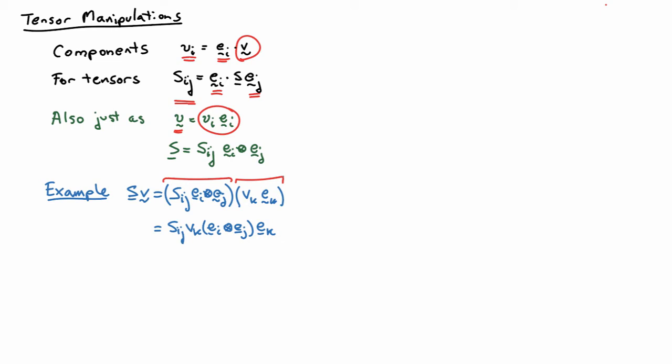Now I can use the definition of the outer product to further the calculation. I'll have EJ dotted with EK multiplied by EI. EJ dotted with EK is just going to be the Kronecker delta. I can use the properties of the Kronecker delta to simplify — there's a sum on J and a sum on K, so I can replace K by J, ending up with Sij VJ EI. This is the component expression for S acting on V.